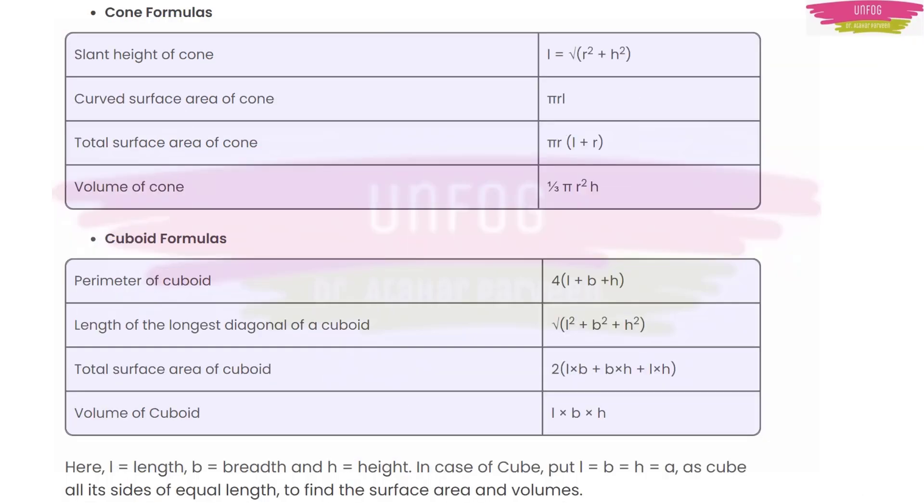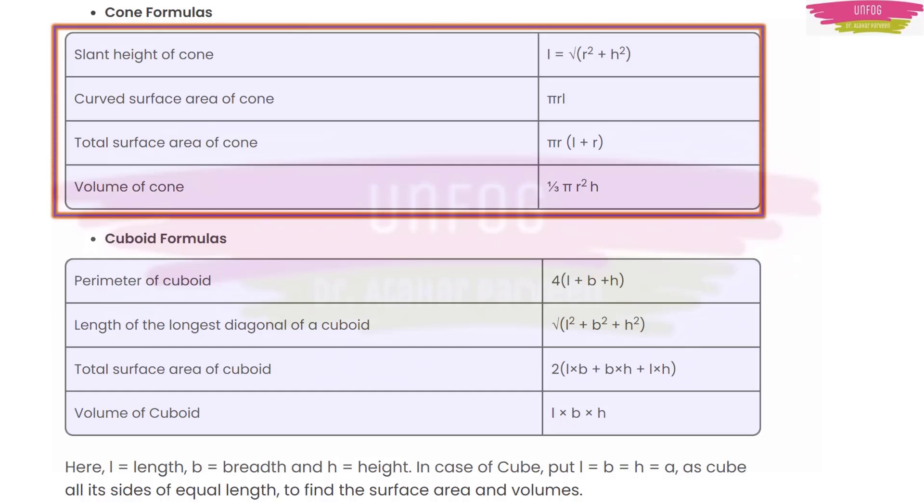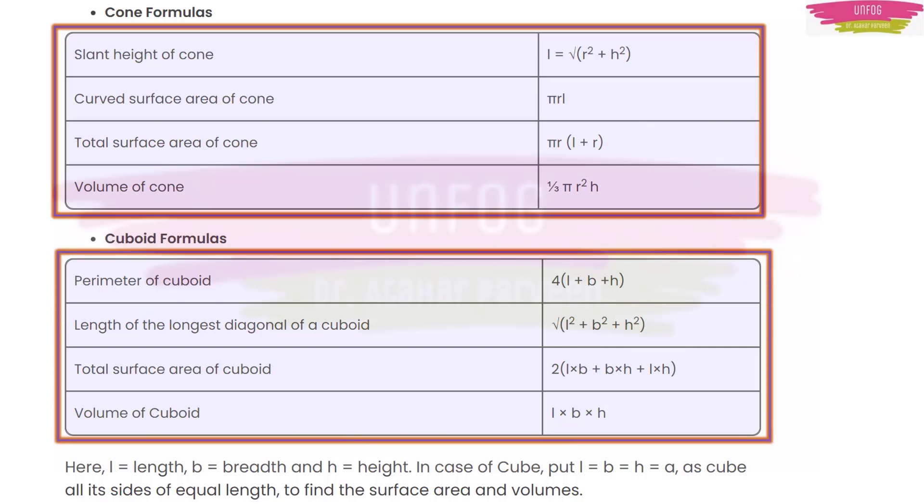Then you have formulas based on cone. Here you have this slant height, which is equal to √(r² + h²). Curved surface area will be πrl. Total surface area will be πr(l + r), and volume of cone will be (1/3)πr²h. And for cuboid, you have perimeter 4(l + b + h), where l is length, b is breadth, and h is height. And the length of the longest diagonal will be √(l² + b² + h²). And total surface area of cuboid will be 2(lb + bh + lh), and of course, volume of cuboid will be length × breadth × height.